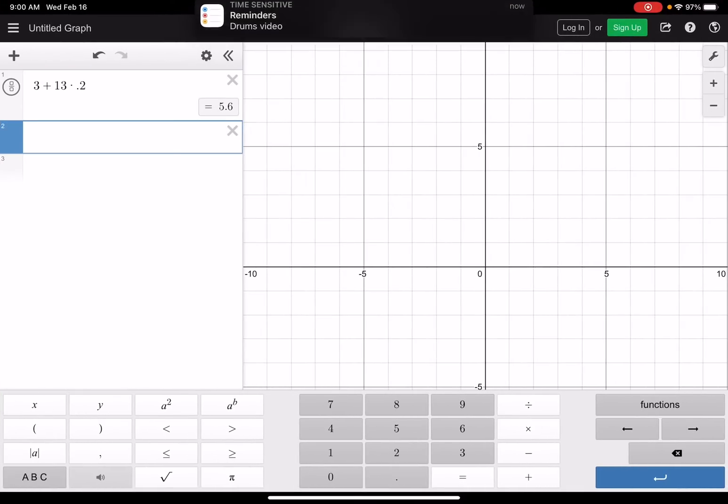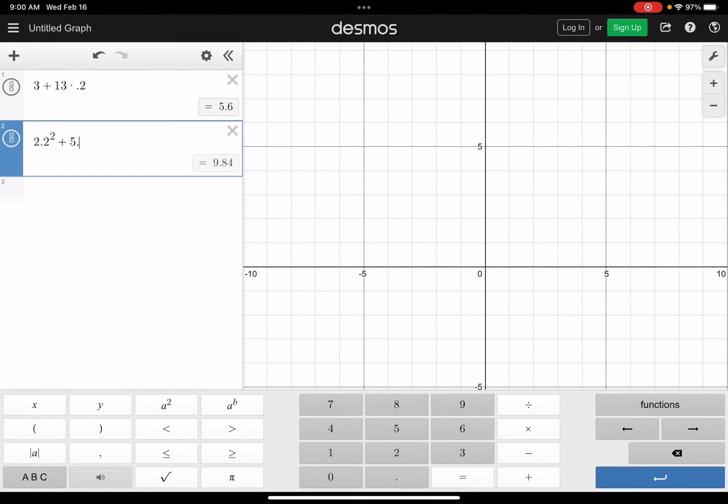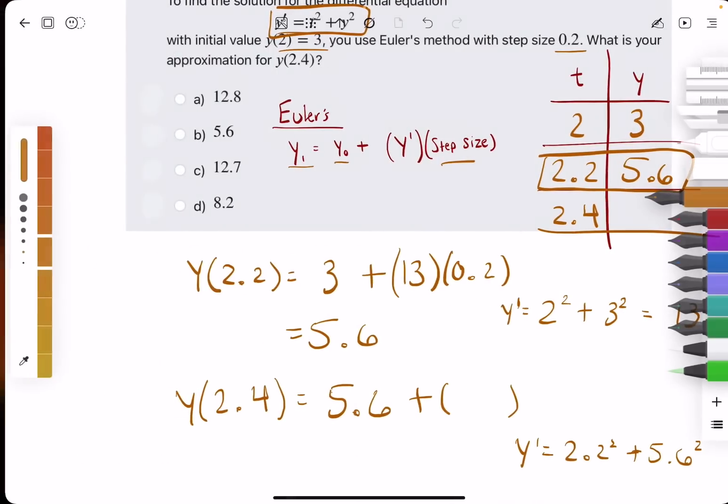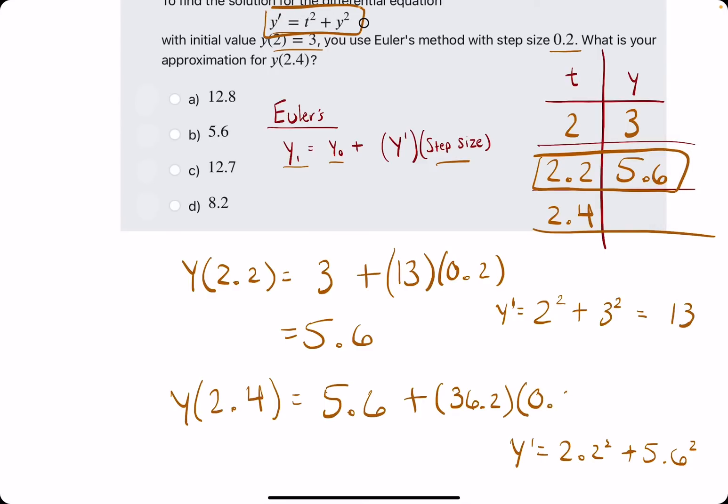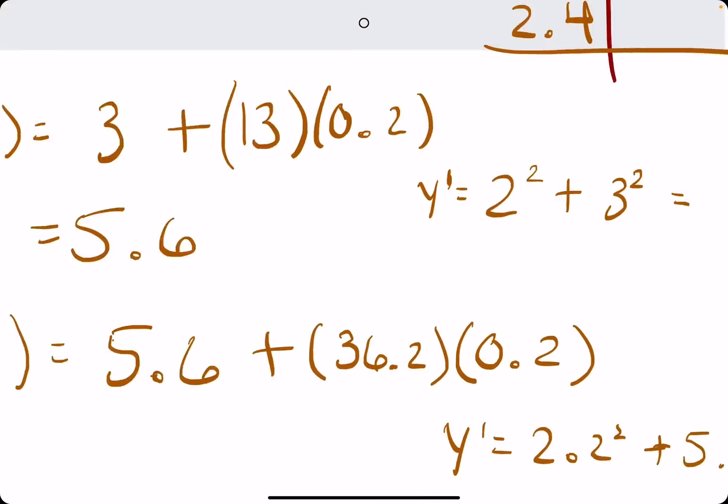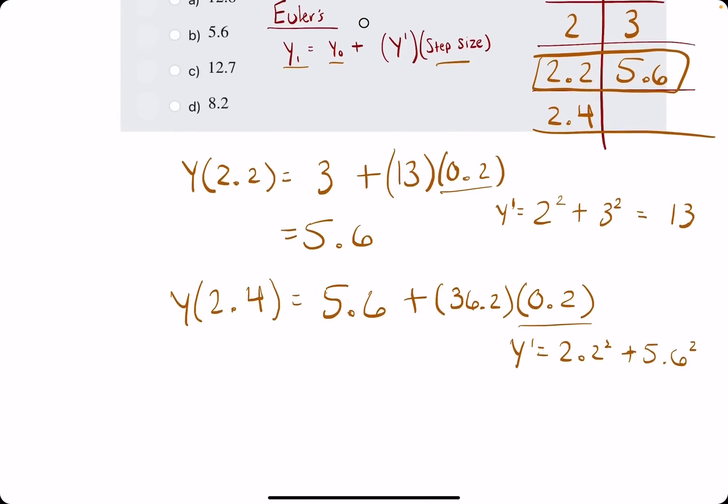Definitely use Desmos for this. 2.2 squared plus 5.6 squared, 36.2 is our y prime. And again, the step size is always the same within each problem. So 0.2.